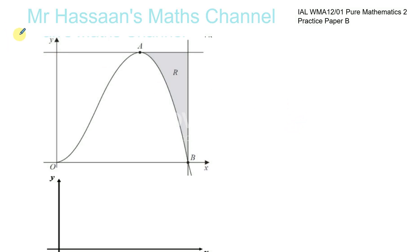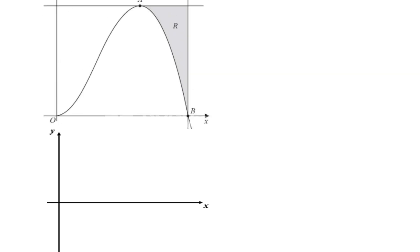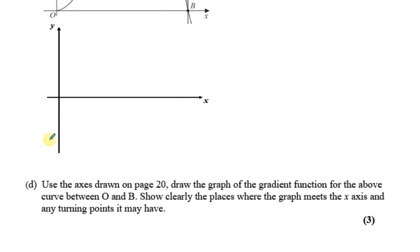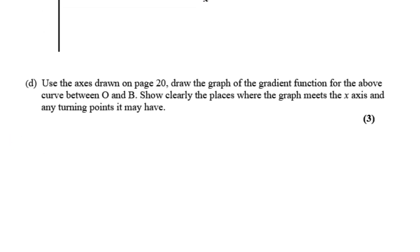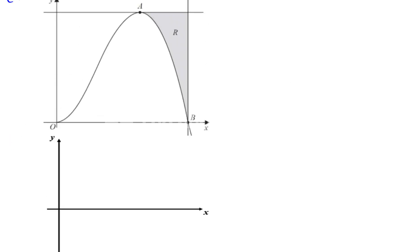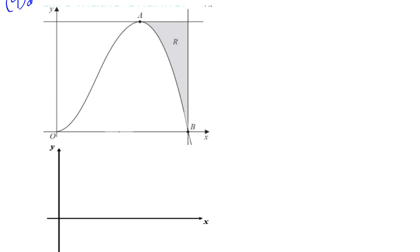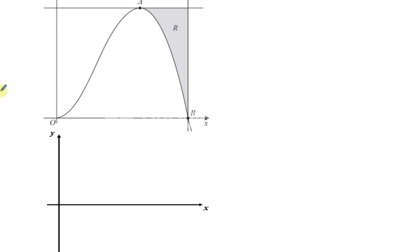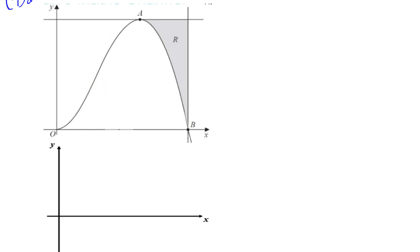Here we have the last part of question number 9 — part D of practice paper B. This is actually not from the C1 or C2 paper; it's a part I typed up myself to make it more relevant to the P2 syllabus, because the P2 syllabus includes drawing the gradient function. So even though we're given the equation of this curve, I'm going to work through that because that's the kind of thing they test you on.